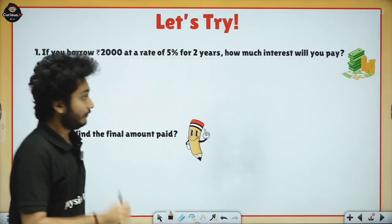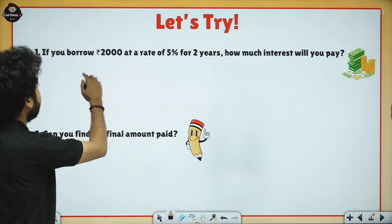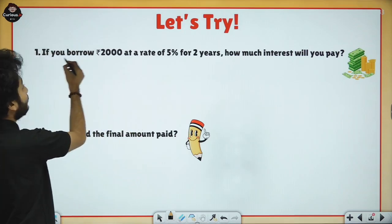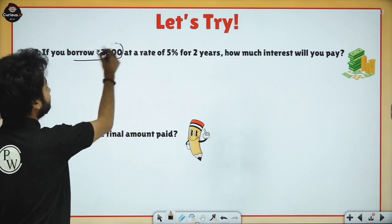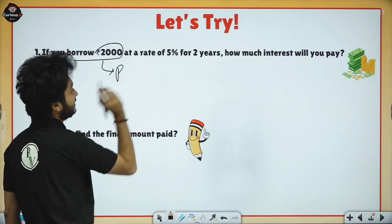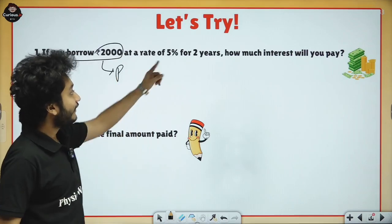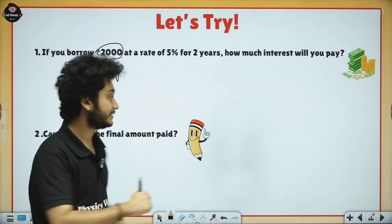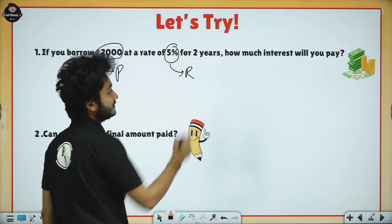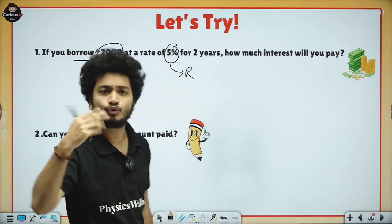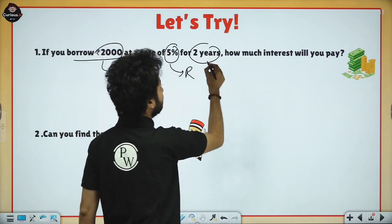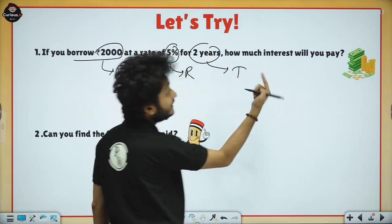Whenever you solve a problem, identify the variables first. If you borrow 2000, then 2000 is the principal. Five percent is the rate of interest. Two years is the time. So how much interest will you pay?